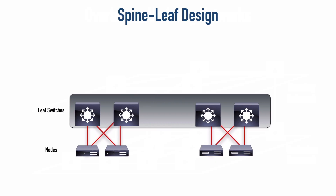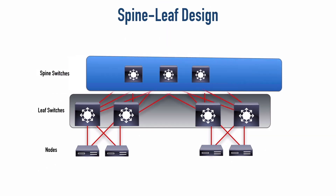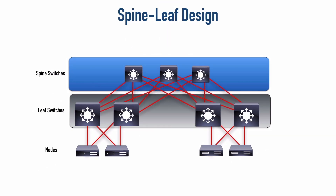We typically see this in data centers using a spine-leaf design. Nodes like servers connect to leaf switches, and those leaf switches interconnect by going through a spine. The spine switches allow any leaf switch to reach any other leaf switch in only a single hop, because every leaf switch is connected to every spine switch.